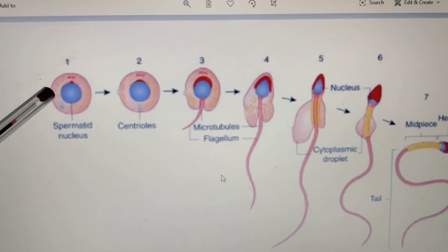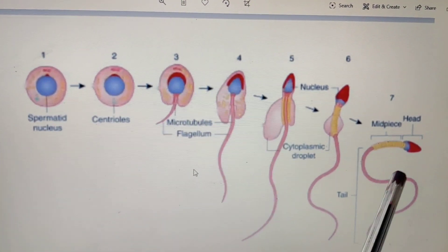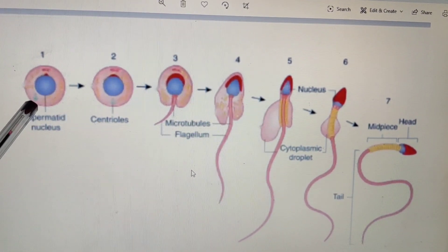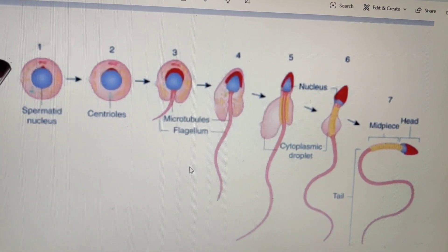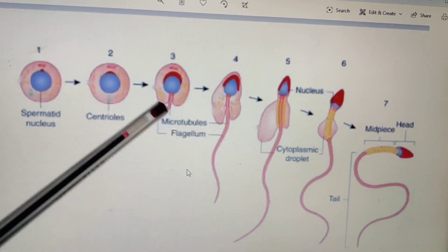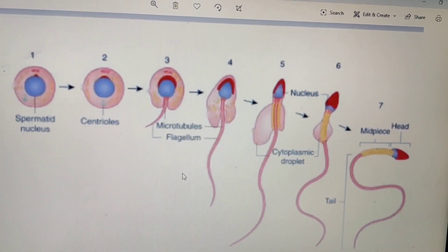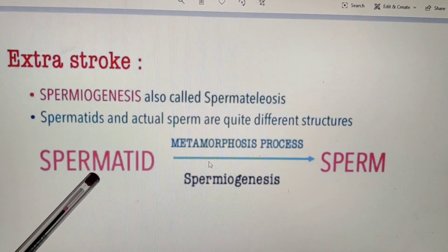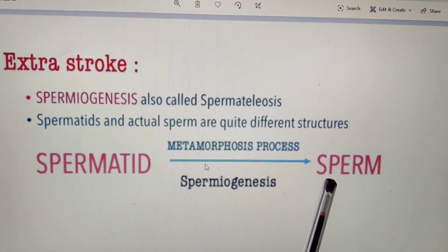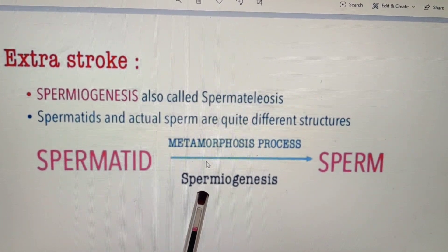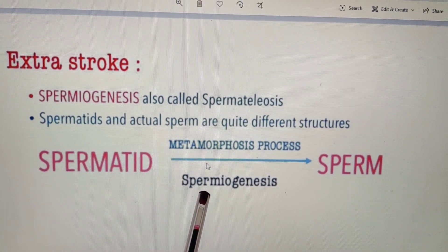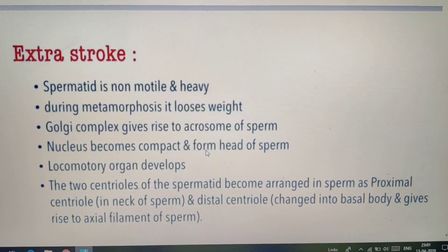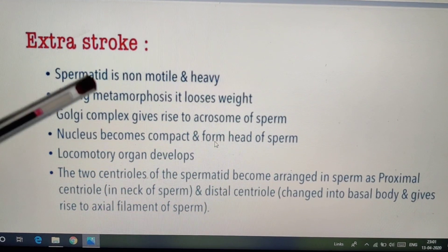This is the structure of the spermatocyte and these are the sperms — we can easily differentiate between the spermatid and the sperm structure. The process of differentiation from spermatid into sperm is termed spermiogenesis. This metamorphosis from spermatid into sperm is termed spermiogenesis.